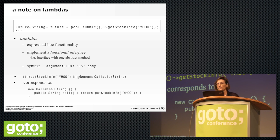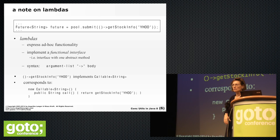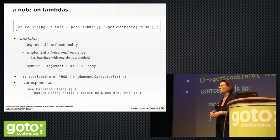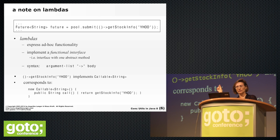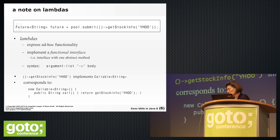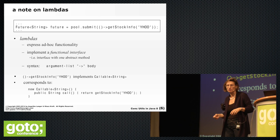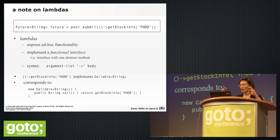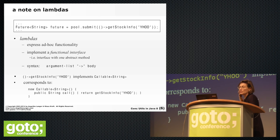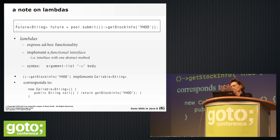Lambda expressions are a new language feature in Java 8. A lambda is basically an anonymous function. It has an arrow symbol in the middle: to the left is the argument list and to the right is the method implementation. It's like an anonymous method — no name, just an argument list and a body. It corresponds to what we've usually done with anonymous inner classes.